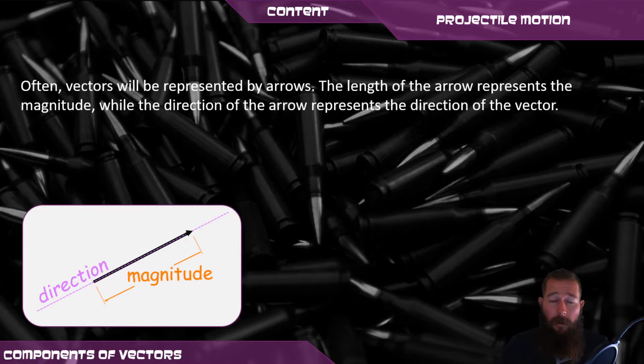When describing them in a drawing, they're best represented with an arrow, where the length of the arrow is the magnitude of the vector, and the direction of the arrow is the direction of the vector.